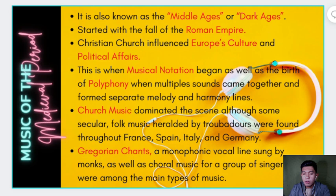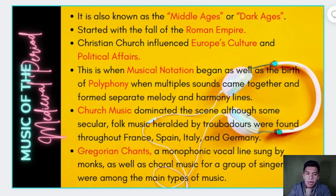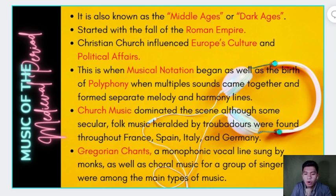Church music dominated the scene, although some secular folk music heralded by troubadours was found throughout France, Spain, Italy, and Germany. During the medieval era, church music — particularly Catholic or Christian church music — really bloomed. These were the songs of the Gregorian chant, which we'll discuss shortly. Although there was also secular or folk music, and those who sang it were the troubadours.